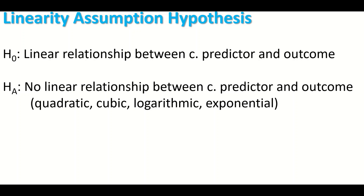The alternative hypothesis means that the predictor deviates from linearity with the outcome, such as a relationship which is non-linear — like quadratic, cubic, logarithmic, or exponential.